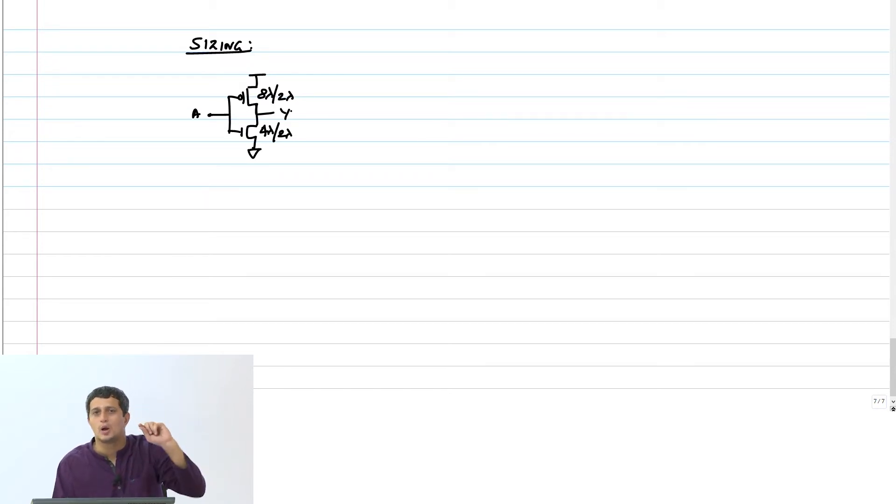And why did we have this twice? So that the pull-up delay and pull-down delay are same. The delay is symmetric. That is the reason we made Wp equals 2Wn.